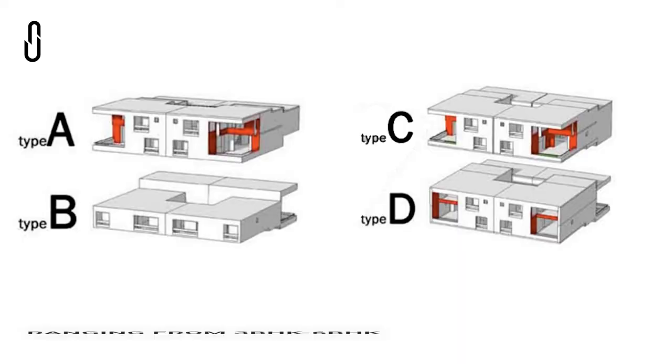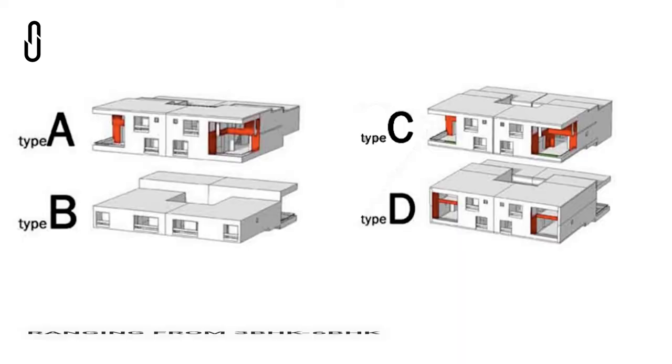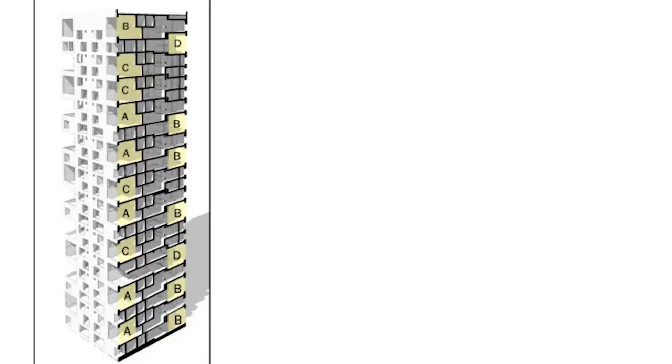The apartment has four typologies of house units ranging from 3 BHK to 6 BHK, varying with areas of about 290 to 420 square meters.